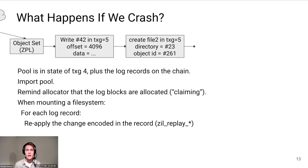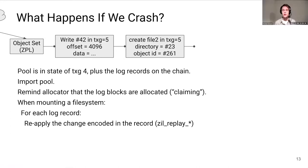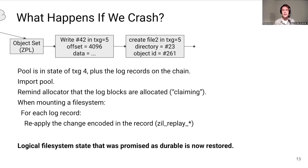But if we crash before finishing writing transaction group five, the pool is in the state of transaction group four plus the log records written to the chain since then. On reboot, we reimport the pool and remind the block allocator that those log blocks were handed out for use by the ZIL — this phase is called claiming. Later, when we mount the file system, we walk the chain of log records and reapply each one to the dataset, so the file system state contains all changes promised as durable before the crash.